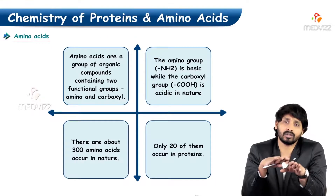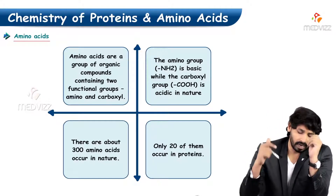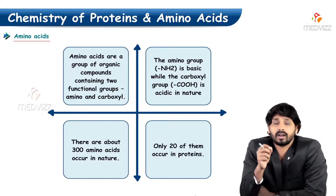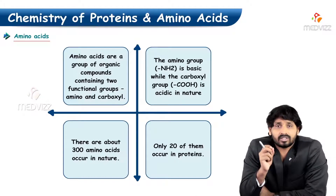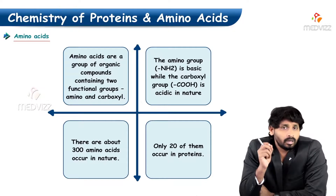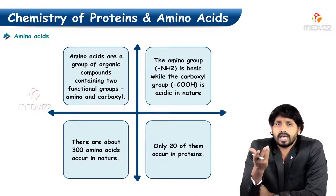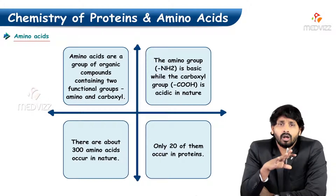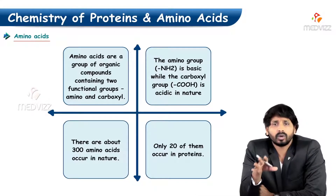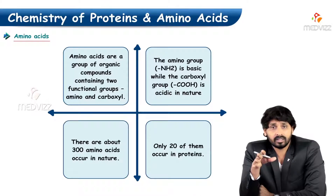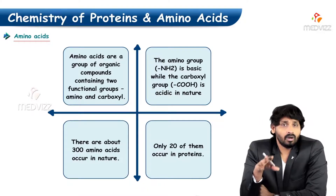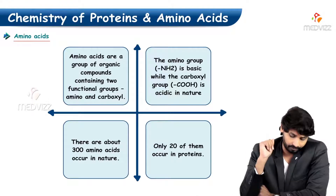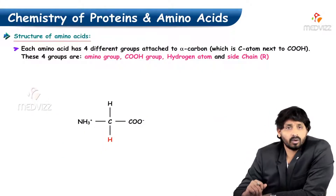There are 300 amino acids present in nature, but out of all these 300, only 20 amino acids are found in living systems — whether humans, animals, plants, or microbial life. So our biological system works with only 20 amino acids.